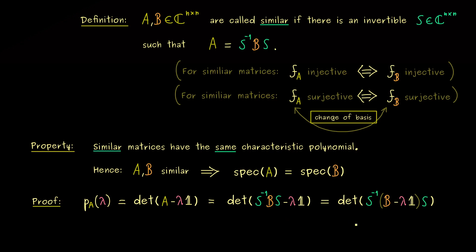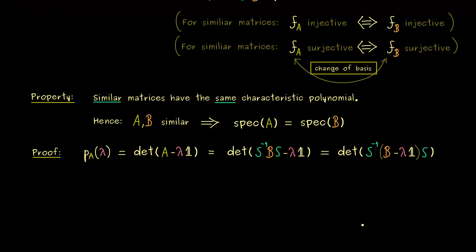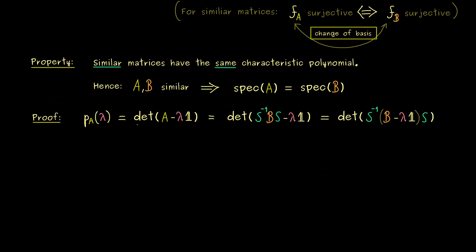However, now we can simply use that we already know that the determinant is multiplicative. This means, we can write the thing here as a product of three determinants. And then we see, we already have the characteristic polynomial of B here in the middle.